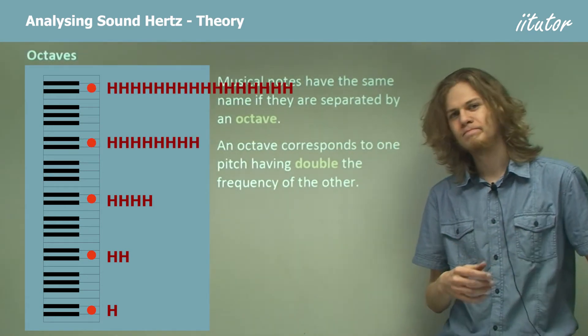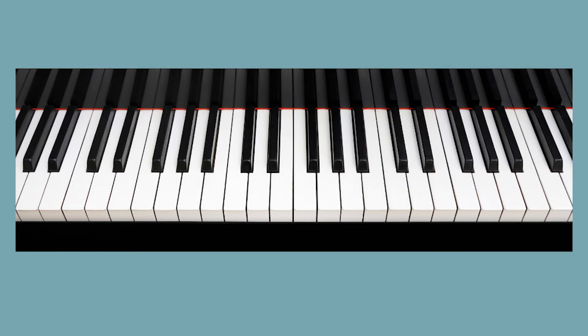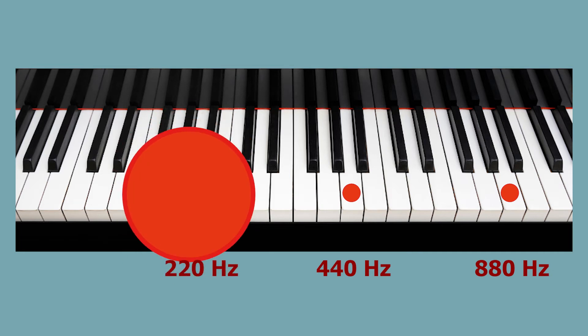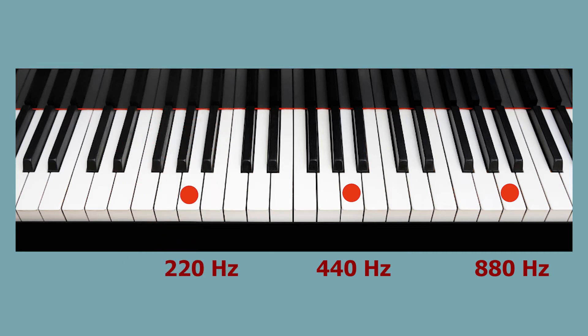If we look at the note called concert A, for example, which has been standardized at 440 hertz, then if we go up one octave from concert A, we'll have an A with a frequency of 880 hertz. So one octave corresponds to a doubling or a halving in frequency if we're going down.